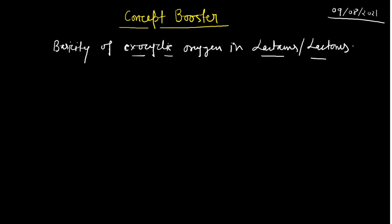Before going into the detail, you should understand what are the lactams, what are the lactones, and what are the exocyclic oxygens. For example, consider a 6-membered ring where nitrogen is present — this is a 6-membered ring containing a carbonyl group (carbon double bond oxygen) and a nitrogen. That nitrogen is connected with a group R, which may be an alkyl or aryl group. This is the lactam. A lactam is a carbonyl system where nitrogen is present at the alpha position to the carbonyl — that is called a lactam.